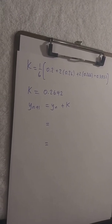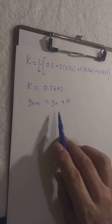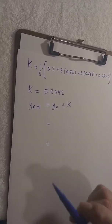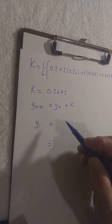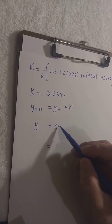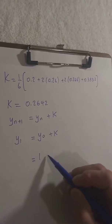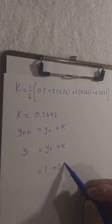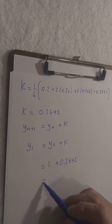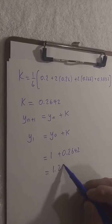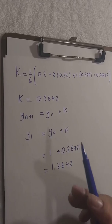That's k. Now we use the last line: yn+1 equals yn plus k. The y we're looking for is y1, so y1 equals y0 plus k. y0 was 1 (that was given) and k is 0.2642, so this ends up being 1.2642. And all of this gives us just y1.